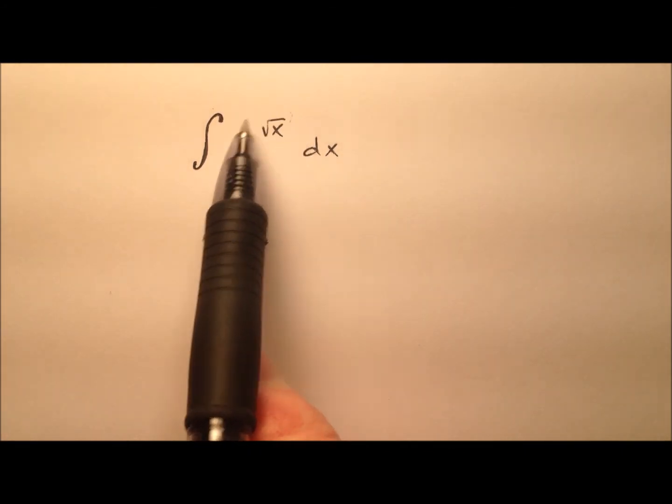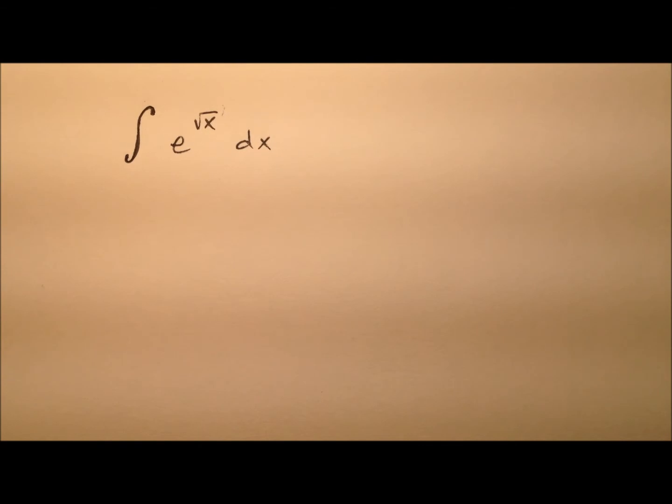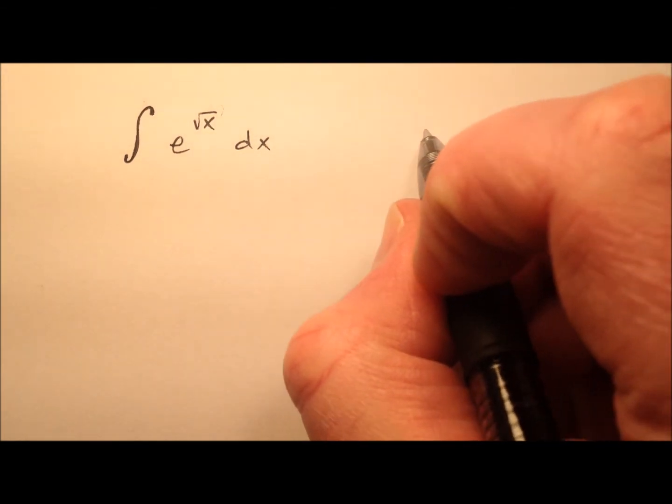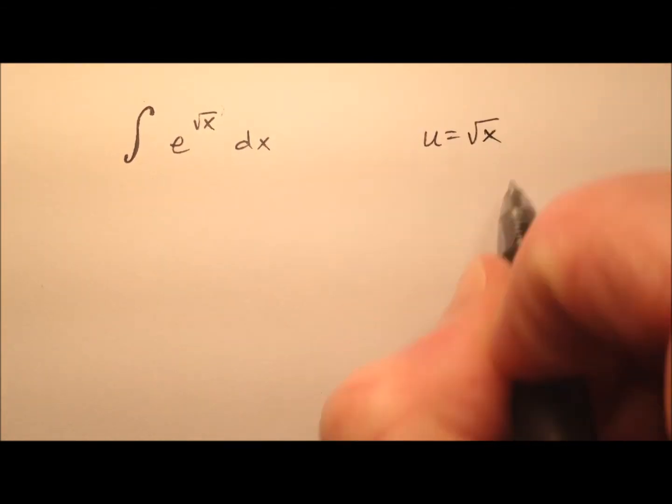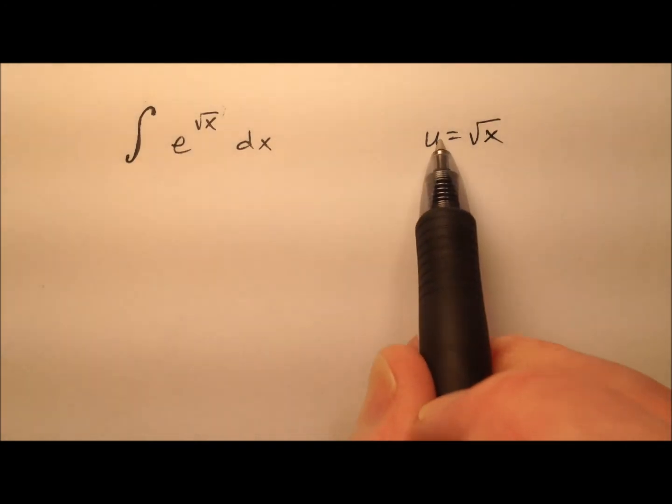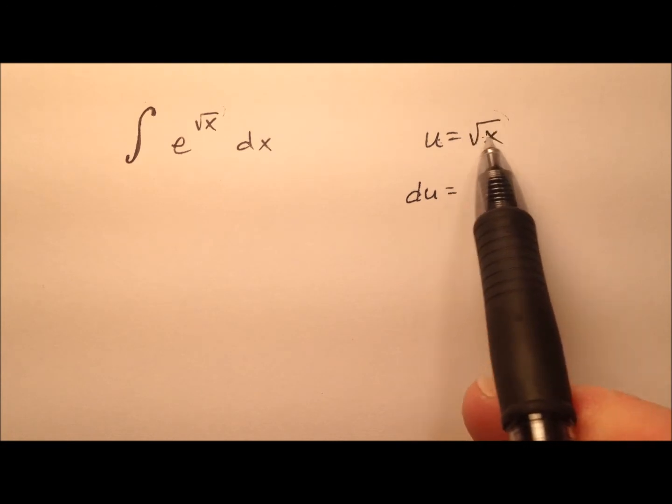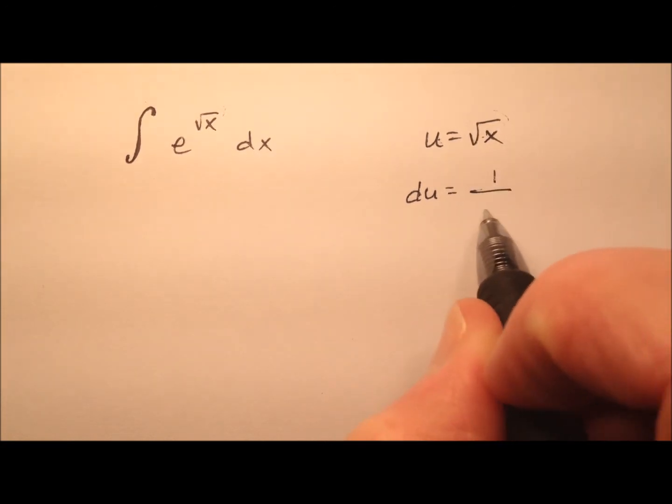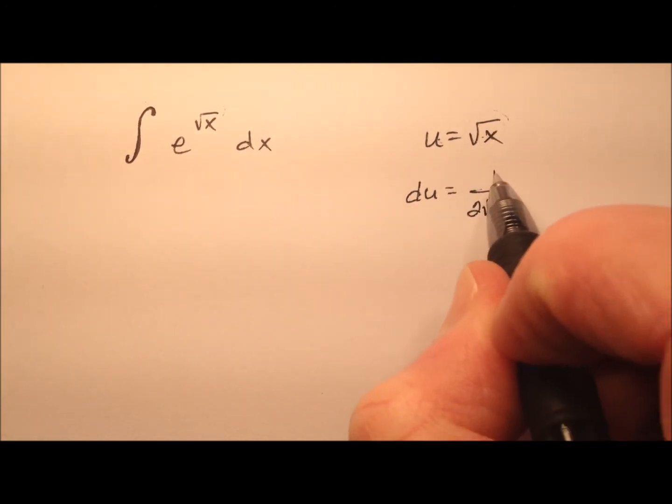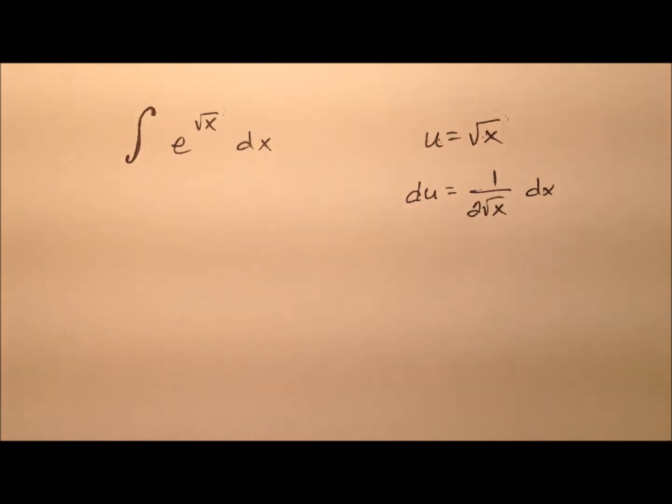Okay, so it seems like this probably would be a great candidate for a u substitution. So I'm going to say u equals the square root of x. And of course when I differentiate both sides, I'll see that du equals, and the derivative of the square root of x is 1 over 2 times the square root of x with our dx there.